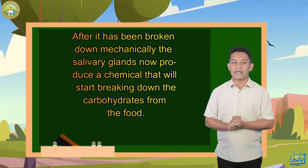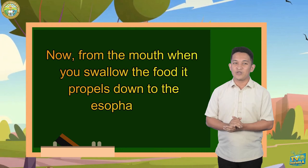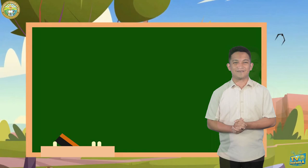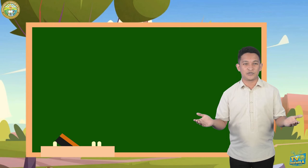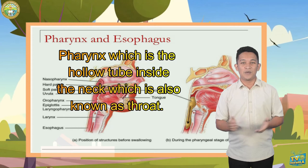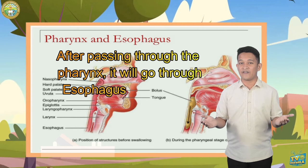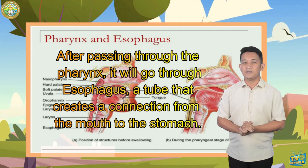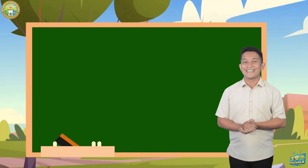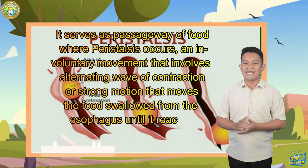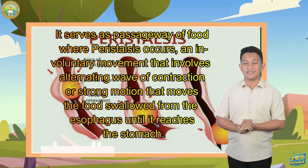From the mouth, when you swallow the food, it propels down to the esophagus. But before going totally down to the esophagus, it passes through the pharynx — the hollow tube inside the neck, also known as the throat. After passing through the pharynx, it goes through the esophagus, a tube that creates a connection from the mouth to the stomach. It serves as the passageway of food where peristalsis occurs — an involuntary movement involving alternating waves of contraction that moves the swallowed food from the esophagus until it reaches the stomach.